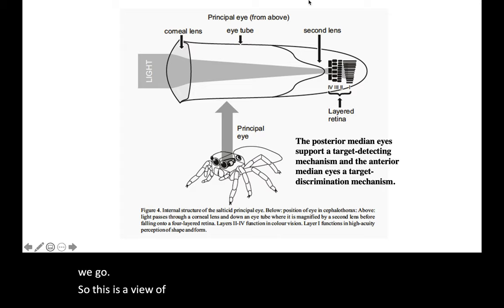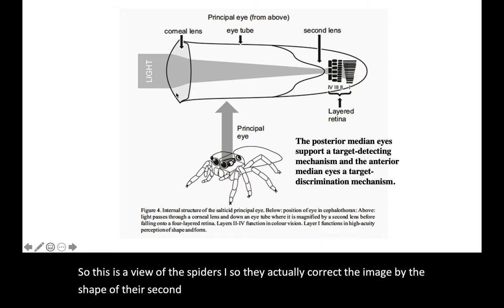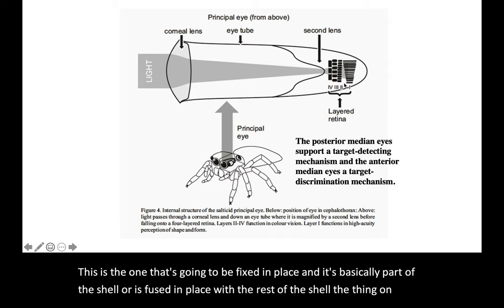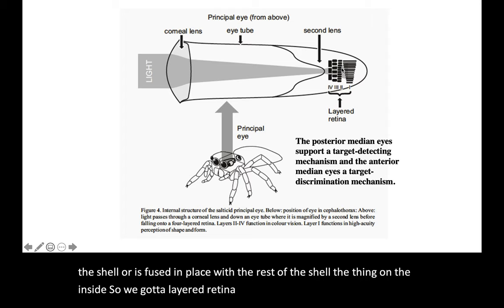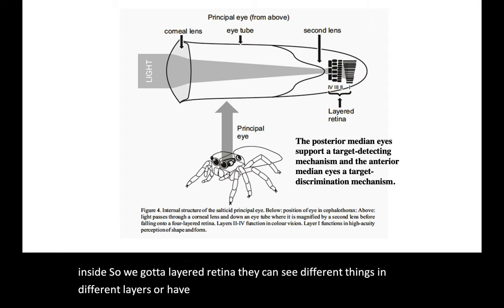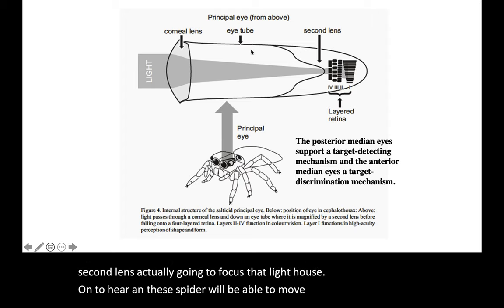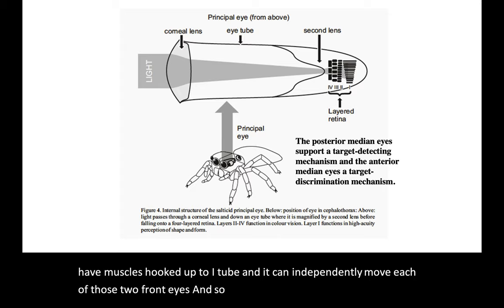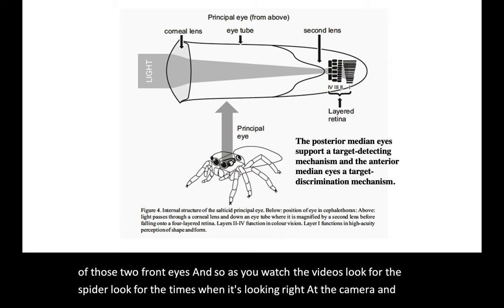So this is a view of the spider's eye. So they actually correct the image by the shape of their second lens. We've got a lens on the outside, the cornea. This is the one that's going to be fixed in place. And it's basically part of the shell or it's fused in place with the rest of the shell. We've got a layered retina that can see different things in different layers or have a better chance of picking up the light. But the second lens is actually going to focus that light out onto here. And the spider will be able to move this eye tube around. So it'll have muscles hooked up to the eye tube and it can independently move each of those two front eyes. And so as you watch the videos, look for the spider, look for the times when it's looking right at the camera and then looking away, trying to find something worth eating, probably.